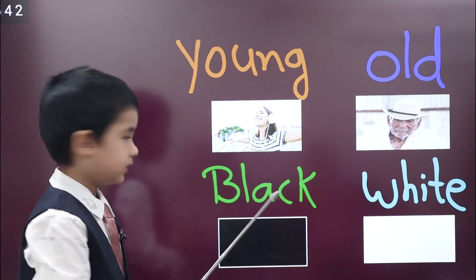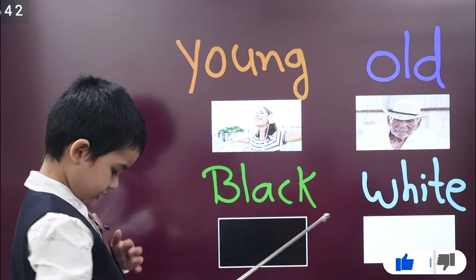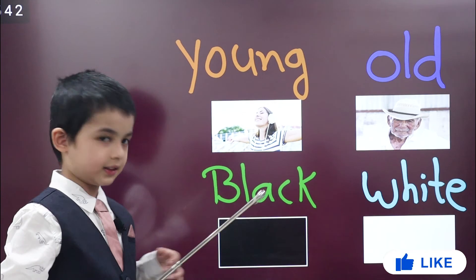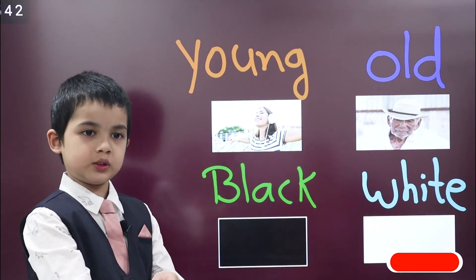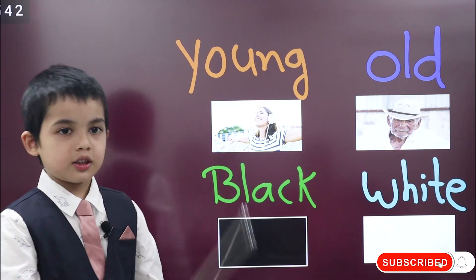Next word is black. My jacket is black color. Opposite of black is white. My shirt is white color.